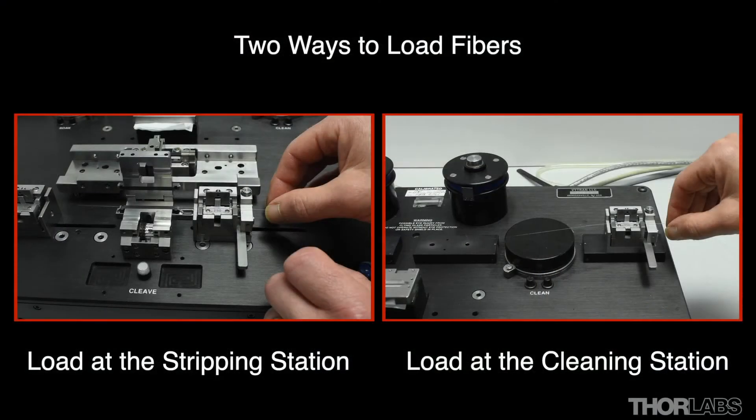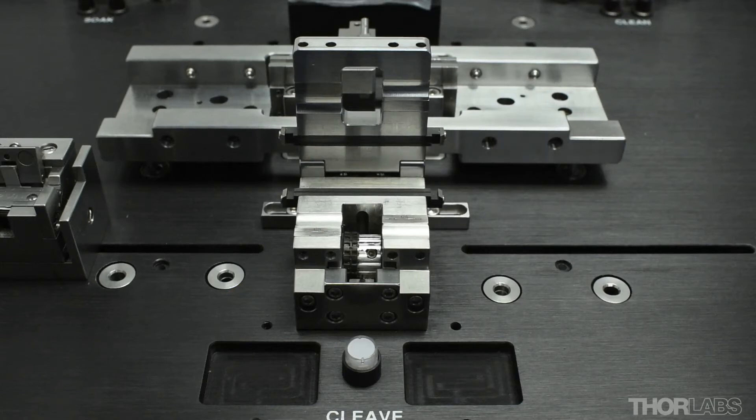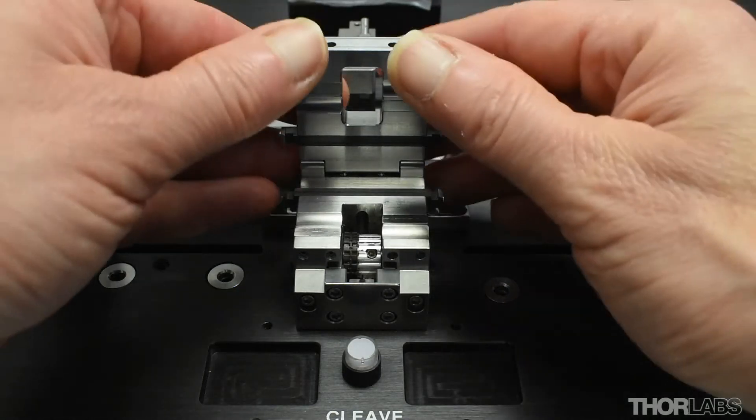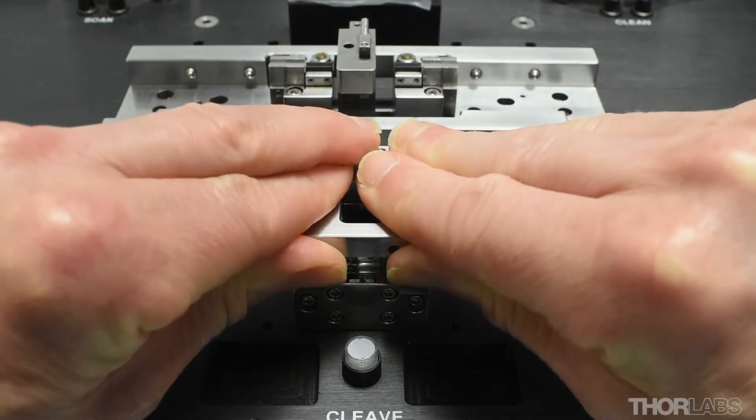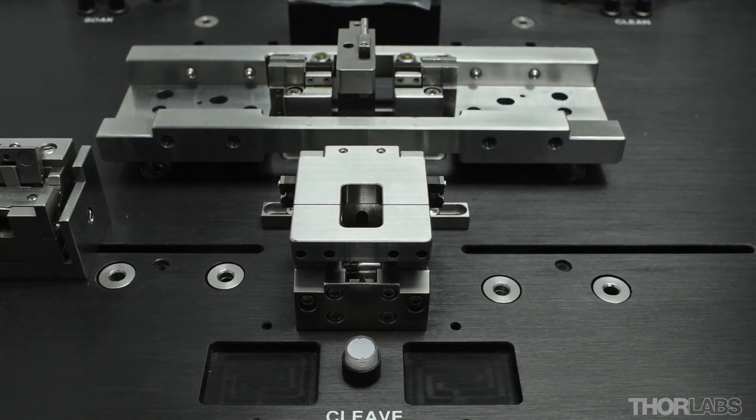Both techniques for loading the fibre into the fibre holding block will result in exactly the same fibre clamping and positioning. During the stripping process, the lid of the stripping block is closed. There are magnets in the lid of this block that hold it firmly shut. It is important that when the lid is closed, enough upward force is applied to counteract the magnetic attraction so the lid is closed in a controlled manner.